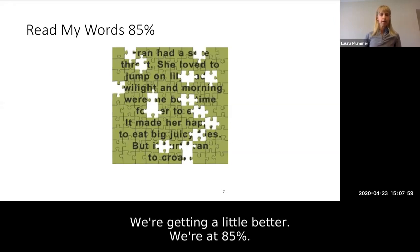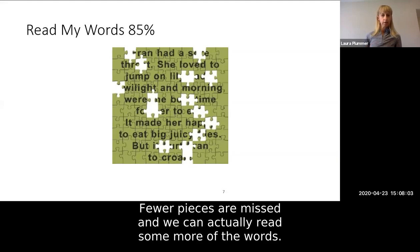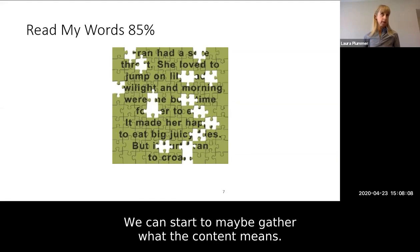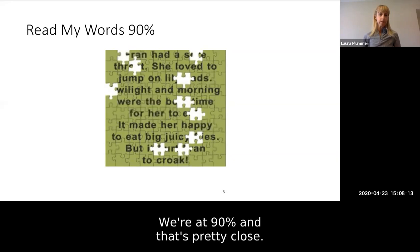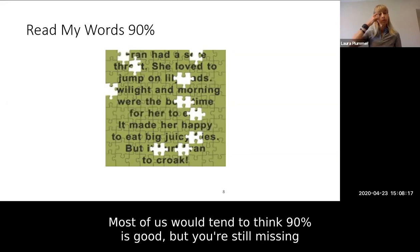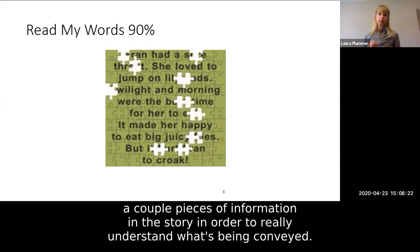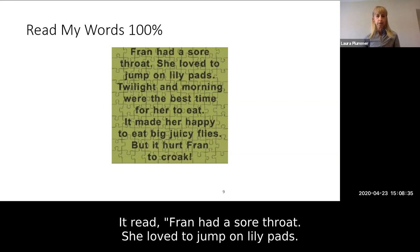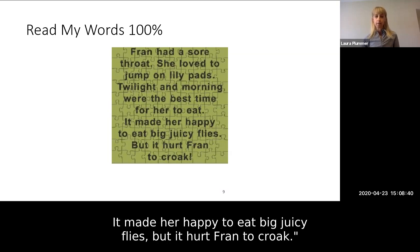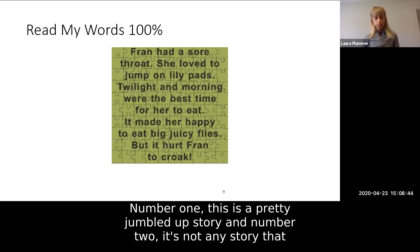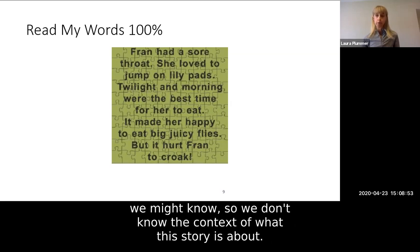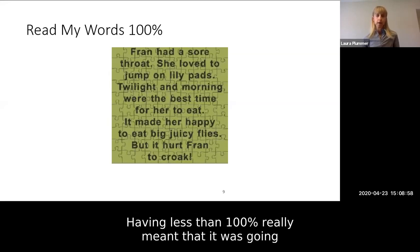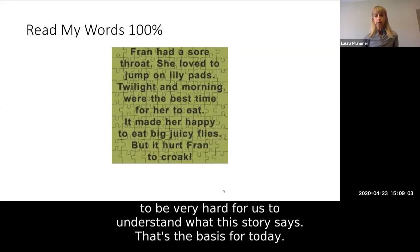At 85%, we're getting a little better — fewer pieces are missing and we can actually read some more words and start to gather what the content means. At 90%, that's pretty close, and most of us would tend to think 90 is good. But you're still missing pieces of information in this story in order to really understand what's being conveyed. At 100%, it reads: 'Fran had a sore throat. She loved to jump on lily pads. Twilight and morning were the best time for her to eat. It made her happy to eat big juicy flies. But it hurt Fran to croak.' This is not a story we might know, so having less than 100% makes it very hard to understand. That's the basis for today.